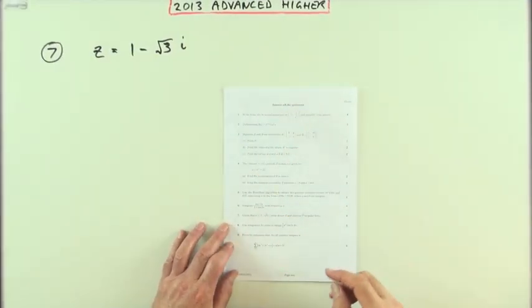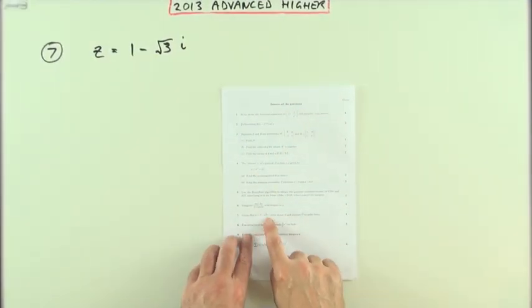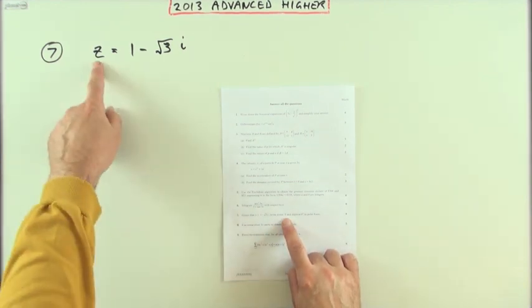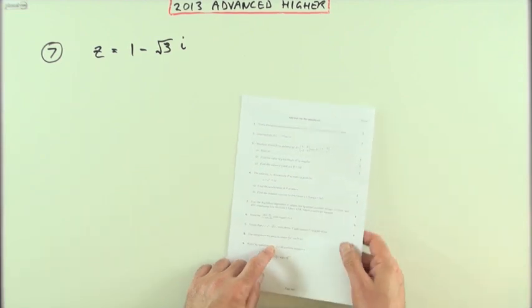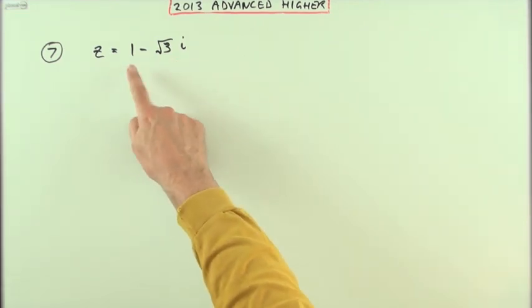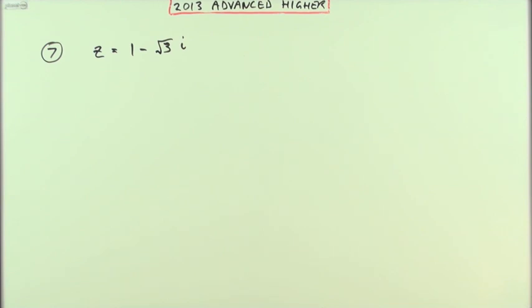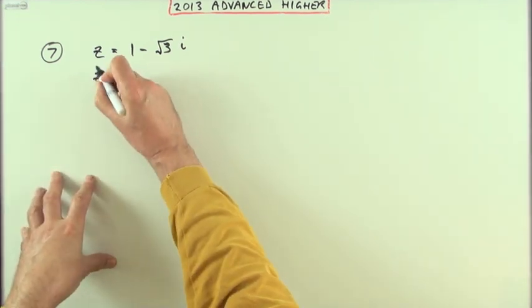Number seven from the 2013 Advanced Higher Maths complex numbers. Given this complex number, write down its conjugate and express the square of the conjugate in polar form. As soon as you look at that, ones and root threes, there's thirties and sixties and so on.